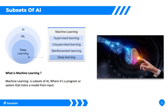In machine learning, we have four classes. Machine learning is a subset of AI where it is a program or system that trains a model from input. The four classes are: supervised, unsupervised, reinforcement, and deep learning. Let me go through them one by one.